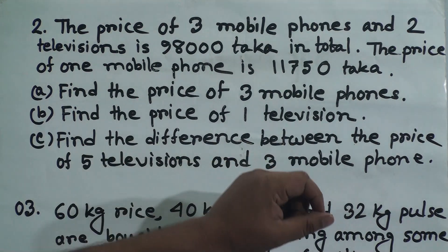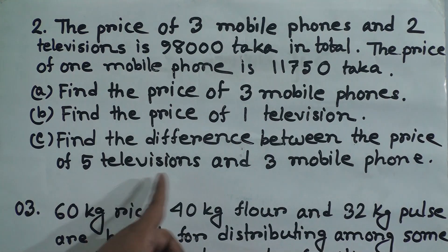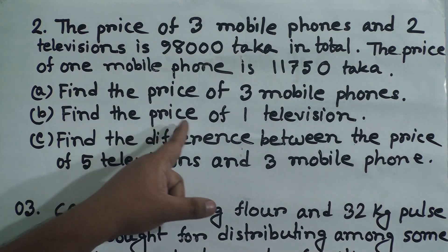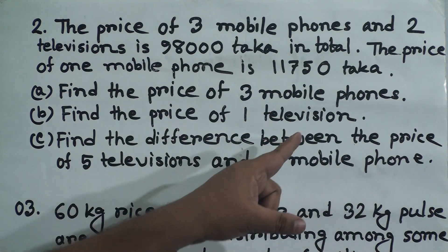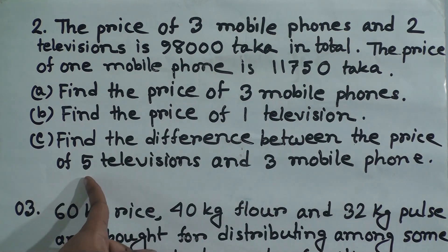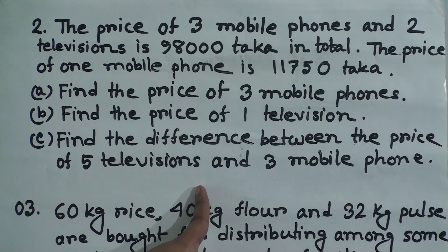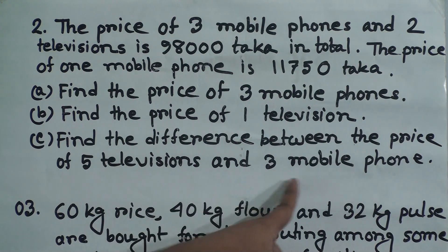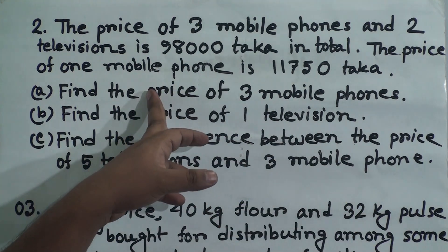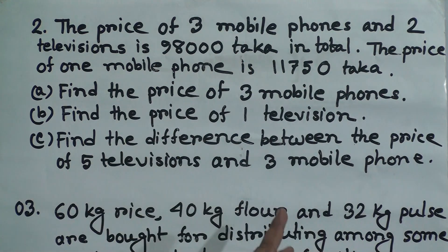(c) Find the difference between the price of five televisions and three mobile phones. From (b) we have the price of one television, so we can find the price of five televisions. From (a) we have the price of three mobile phones. Then subtract to get the answer.